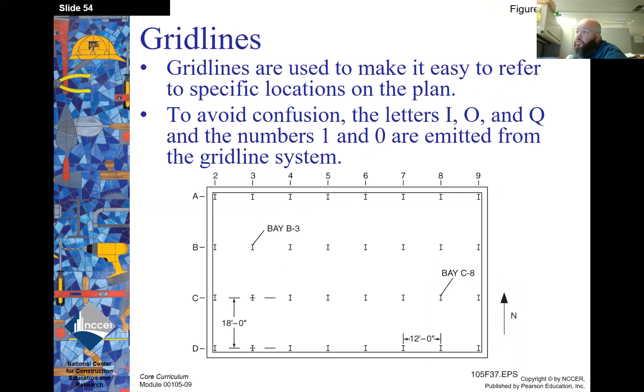Grid lines. Grid lines are used to make it easy to refer to specific locations on the plan. To avoid confusion, the letters I, O, and Q, and the numbers one and zero are omitted from the grid line system.